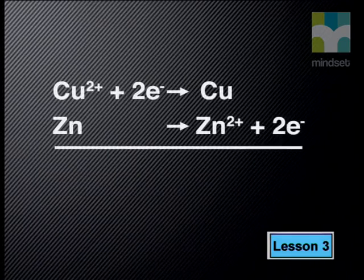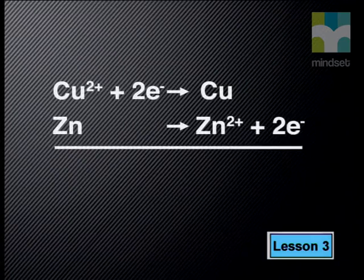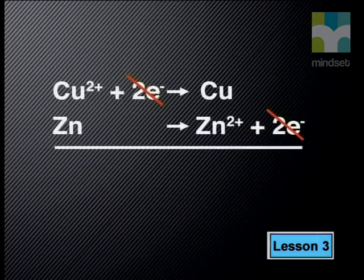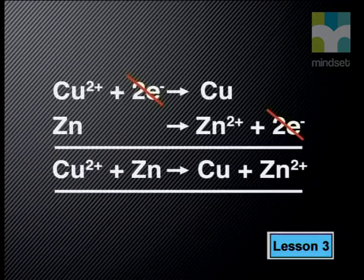Let us revisit the example of the two half reactions and see how they add up to make a full redox reaction: Cu²⁺ + 2e⁻ → Cu, and Zn → Zn²⁺ + 2e⁻. The number of electrons on the reactant side equals the number on the product side. We cancel these out because the same number of electrons lost in the oxidation half reaction is gained by the reduction half reaction. Adding the reactants and products together gives us the complete redox equation.